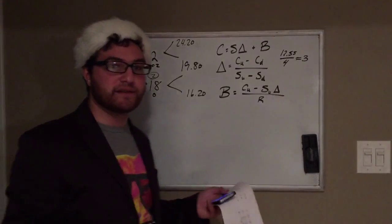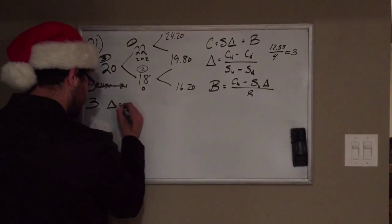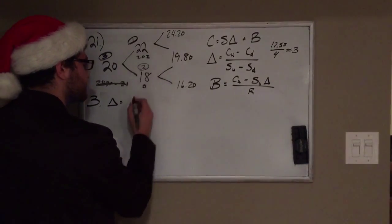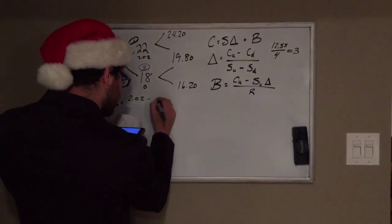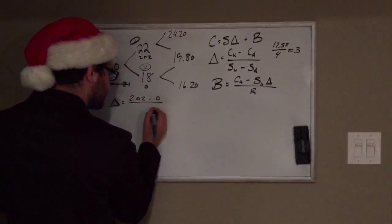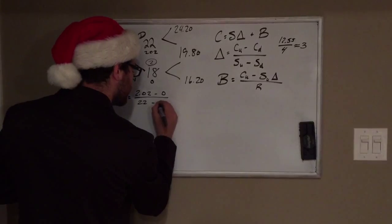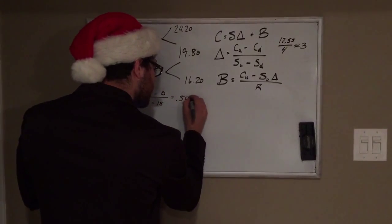Number 3 is going to be the last one. This is going to give us the actual answer to the problem. Let's figure out the delta. That's going to be the price of the call option that goes up - 2.02, which is what we figured out in one - minus price of the option if it goes down, which is zero, which we just solved as well - over the two prices, so that's 22 minus 18. What does that give us? That gives us 0.505.